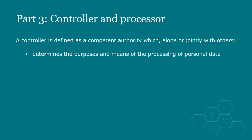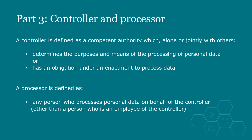The terms controller and processor are defined in Part 3, Section 32. A controller is a competent authority which alone or jointly with others determines the purposes and means of the processing of personal data, or has an obligation under an enactment to process data. Only competent authorities can be joint controllers under Part 3, so any arrangement between a controller which is a competent authority and one which is not cannot be a joint controller arrangement. For example, this applies to arrangements between police counter-terrorism units and the intelligence services, because the intelligence services aren't competent authorities. A processor is defined as any person who processes personal data on behalf of the controller, other than a person who is an employee of the controller.